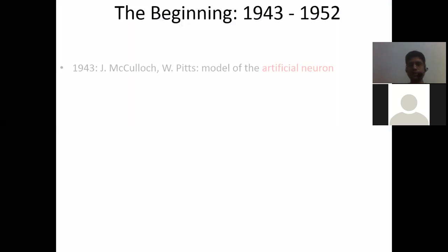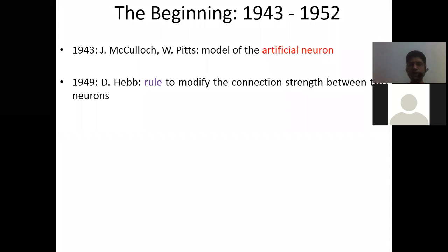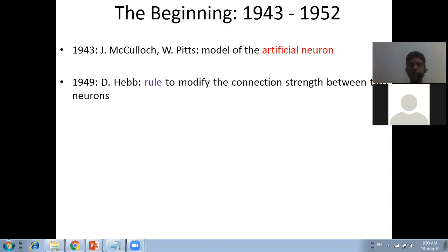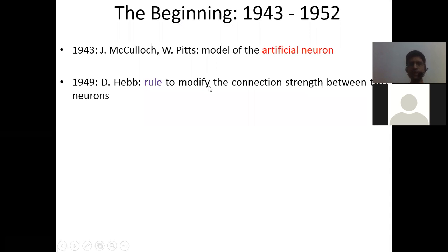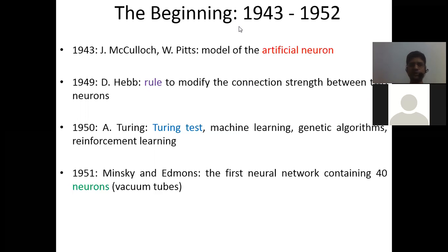It all started in 1943 when a model of the artificial neuron was designed by McCulloch and Pitts. Then in 1949 we have rules to modify the connection strength between two neurons. After that in 1950 we have the Turing test, machine learning, genetic algorithms, and reinforcement learning.